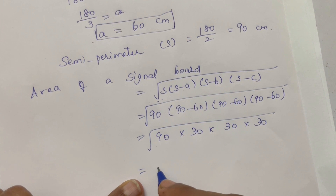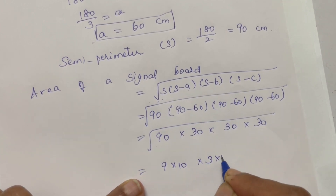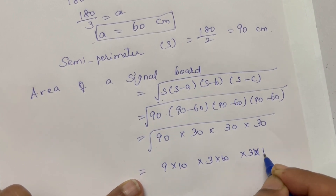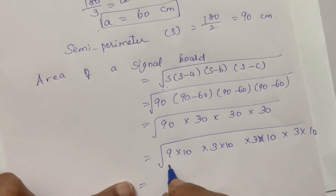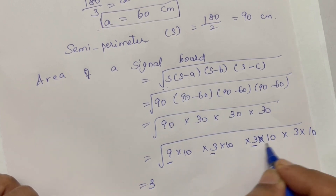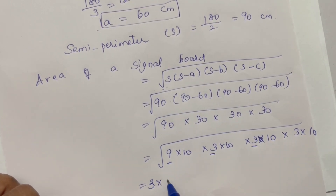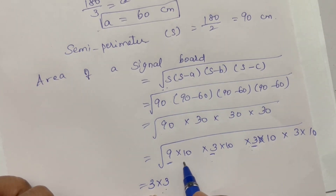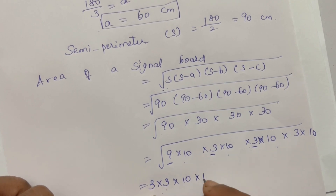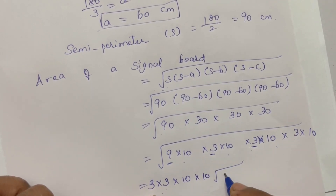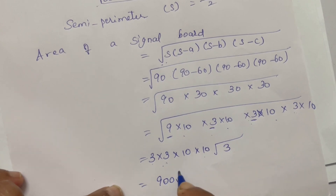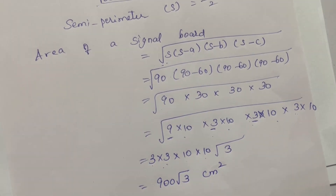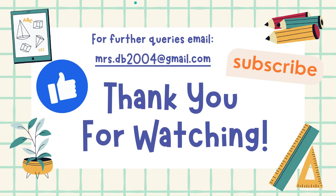Split 9 as 3 into 3, and 10 into 3 into 10, again 3 into 10. Taking square roots: 3 threes give square root of 9, and there are 4 tens giving square root factors. Remaining: 3 multiplied gives 3 threes are 9, and 9 into 100 equals 900. Therefore the area of the signal board is 900√3 cm².